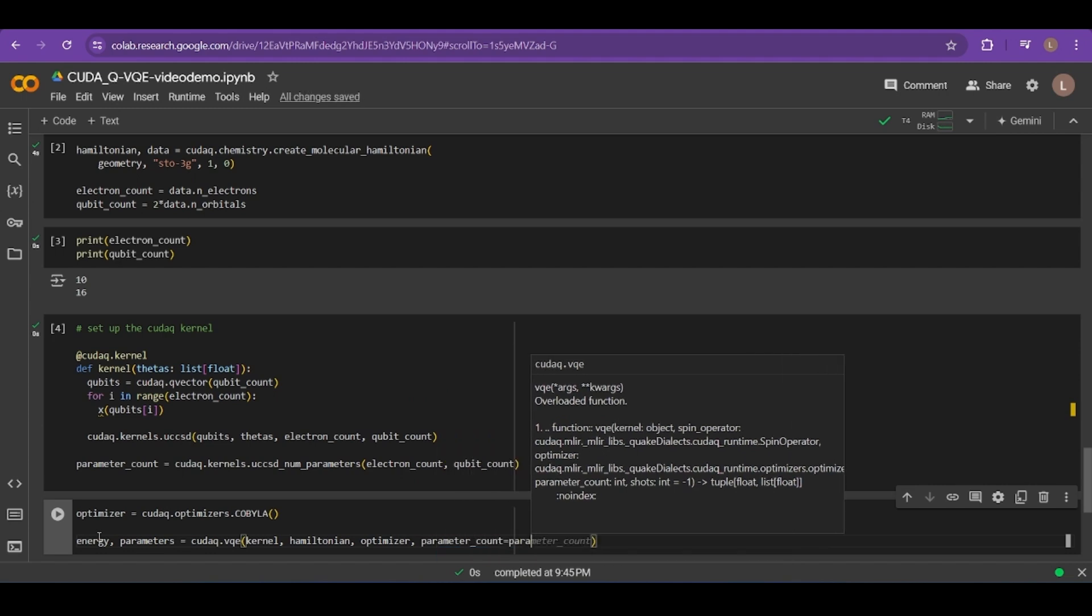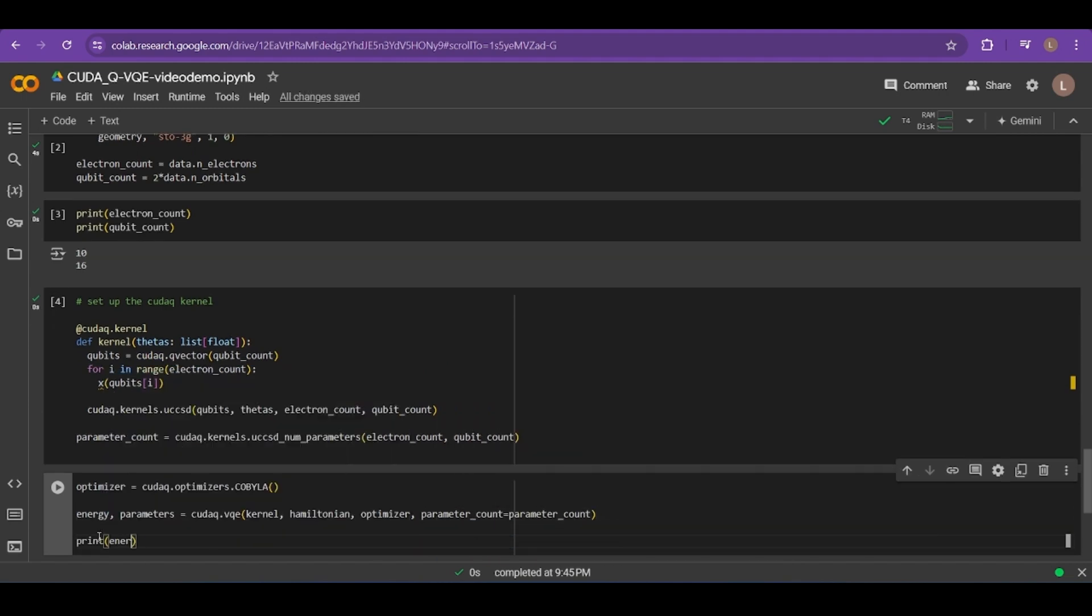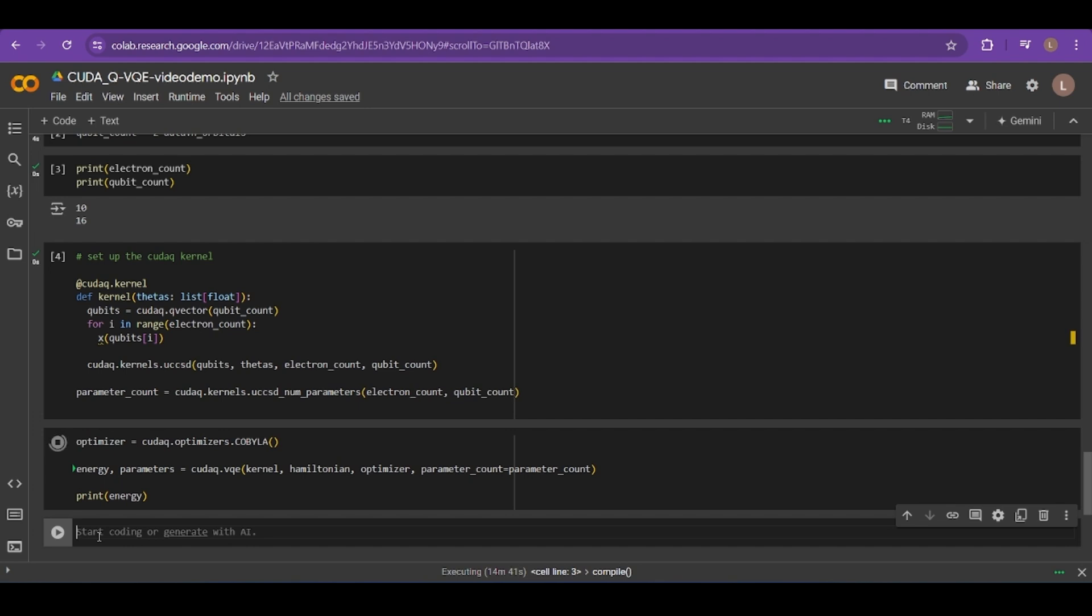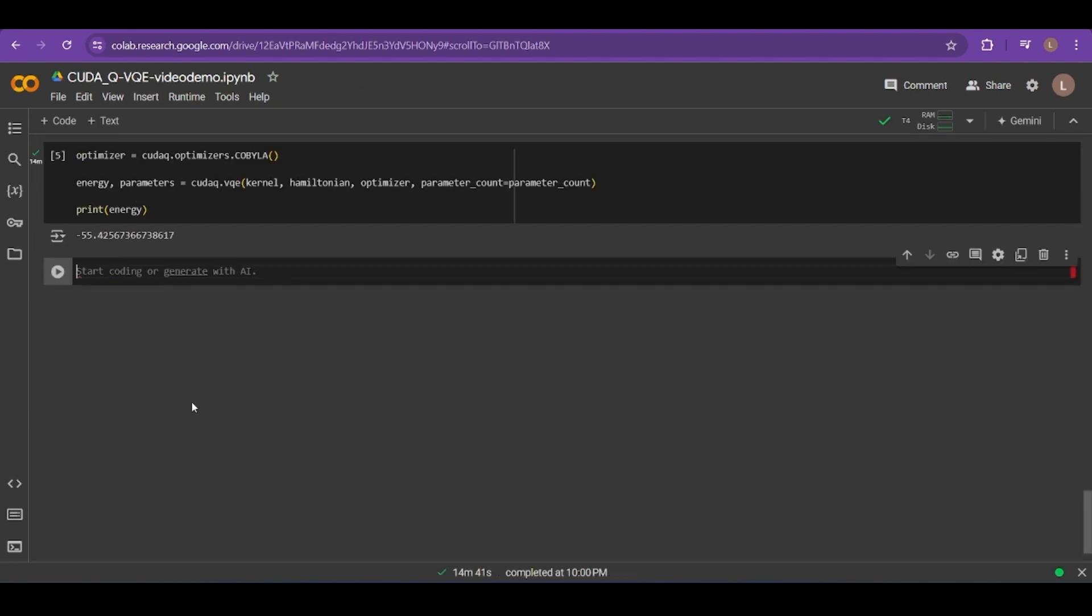Now, we can do one of two things. We can immediately run this quickly by picking an optimizer and then calling the CUDAQ VQE function and printing the resulting energy. Or, we can do a bit more work and watch the simulation progress. That's what we're going to do.